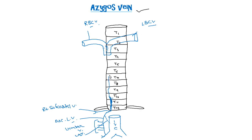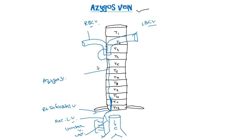The azygous vein then ascends mainly on the right side of the vertebra, in front of the vertebra. At the level of T4 it will arch and turn into the superior vena cava. This is the azygous vein.